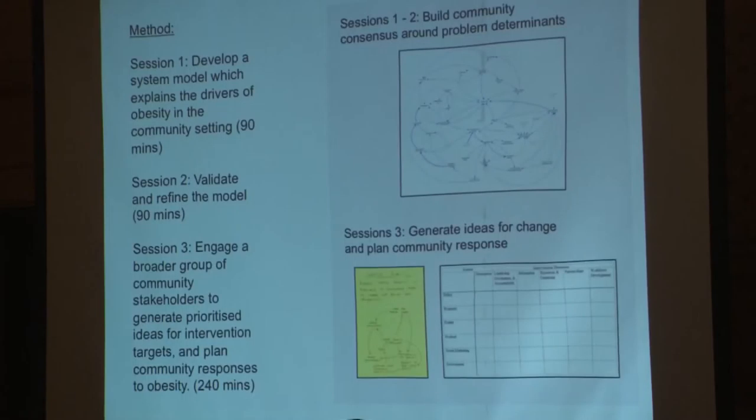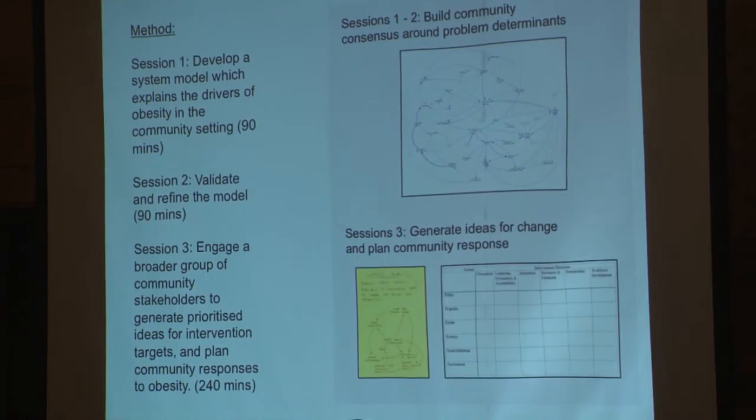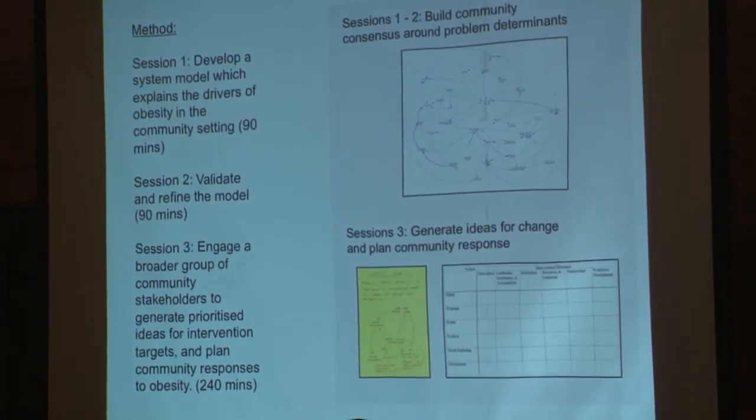The method we developed for doing this involved three workshop sessions. We've done this with groups ranging from 15 to 20, up to 50 or even 100, all important community stakeholders — people who are related in their work and their life to the problem, in this case obesity, that we're wanting to investigate. We work over three sessions to develop a system model, a complex kind of logic model, which explains the drivers of obesity in that community setting. We work by discussing the issue with these people, deciding what the important determinants are, and identifying those complex interdependencies.